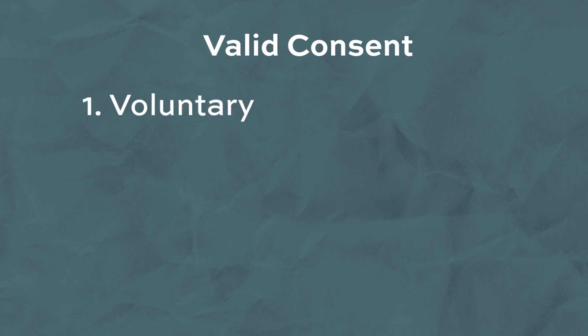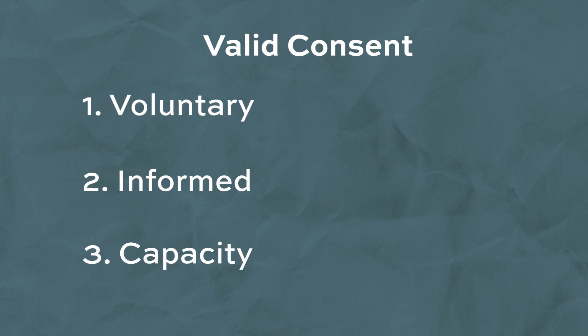For consent to be valid it needs to be: one, voluntary; two, informed; and three, obtained by the correct authoriser who must have capacity. Without these three things you'll be assaulting the patient, which is all the more reason you should learn exactly what consent is and what it includes.